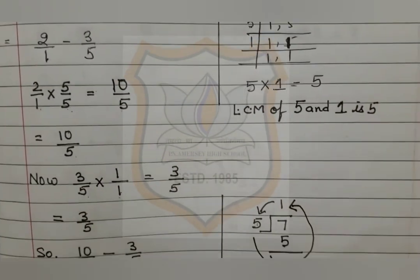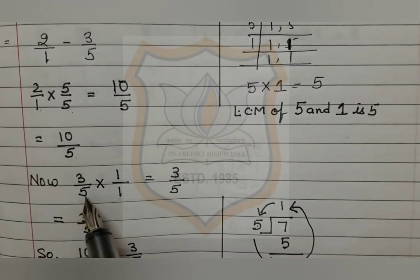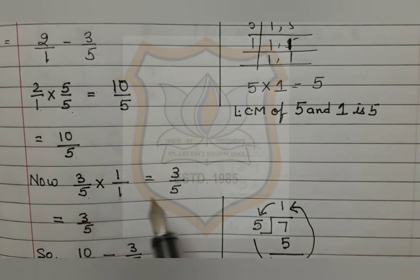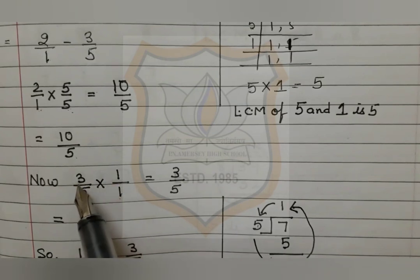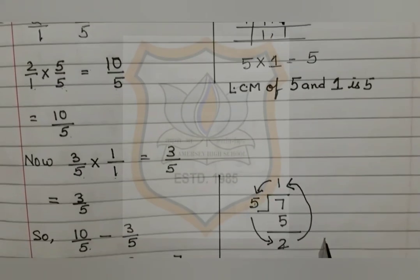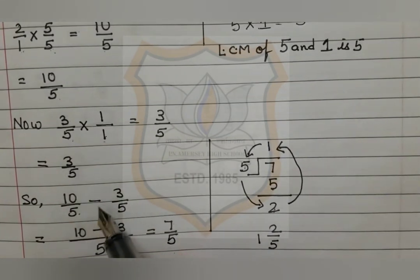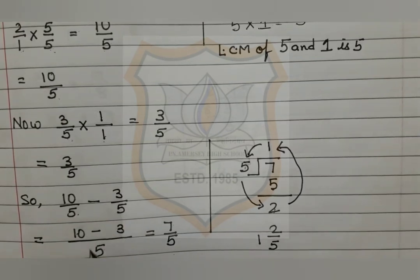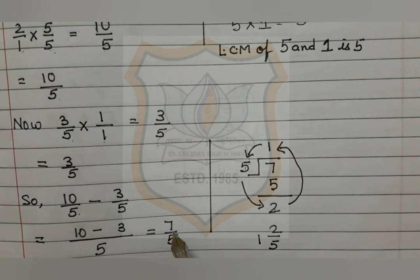The next fraction is 3 upon 5. 5 is multiplied by 1 to get 5. If the denominator is multiplied by 1, the numerator must also be multiplied by 1. So 3 into 1 is 3, and our fraction remains 3 upon 5. Now both fractions are like fractions: 10 upon 5 minus 3 upon 5. We put 5 under the fraction line and above it 10 minus 3, which equals 7 upon 5.